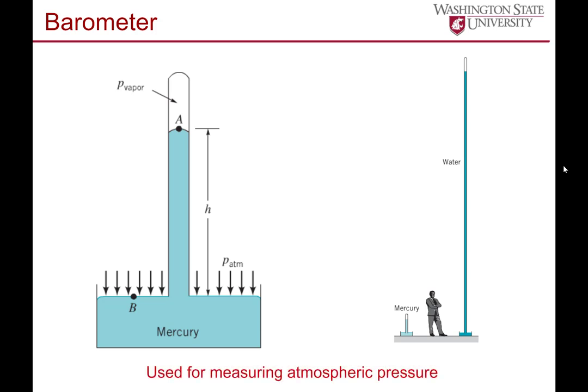A barometer is typically used for measuring atmospheric pressure but can also be used to find vapor pressure. The equation for that is: atmospheric pressure equals gamma H plus the vapor pressure. You're looking at that height of the column of mercury, hence why we often talk about millimeters of mercury for pressure.